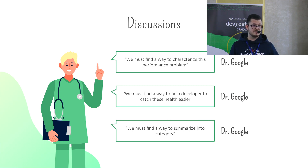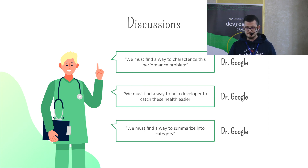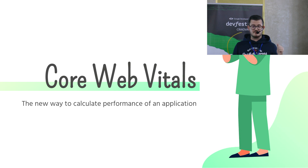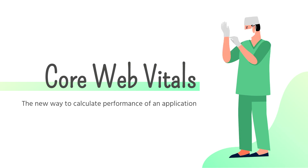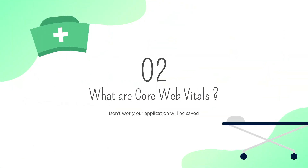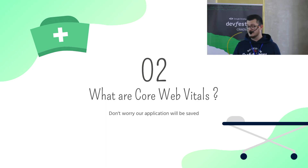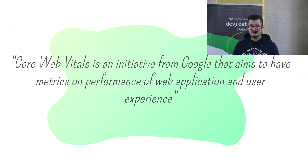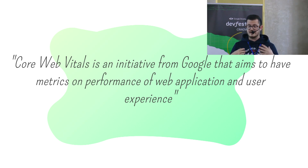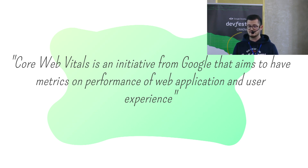An application with a good score has better indexing than an application with a bad score. So Core Web Vitals is a new way to calculate the performance of an application. Core Web Vitals is an initiative from Google that aims to have metrics on performance of web applications and user experience.